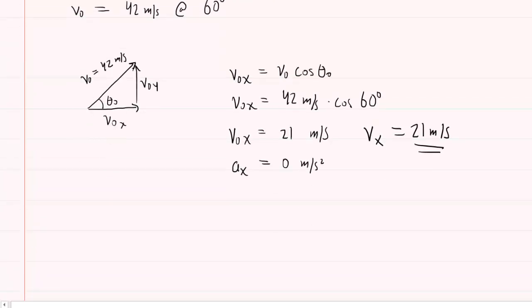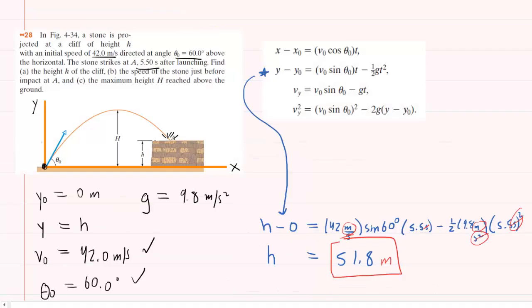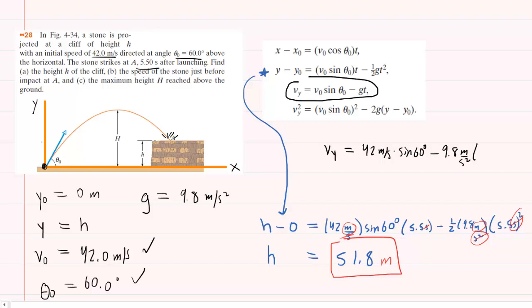Next, we find the final y-velocity using the projectile motion equation: final y-velocity equals the initial speed of 42 meters per second times sine of 60 degrees, minus 9.8 meters per second squared times 5.5 seconds. Punching that into the calculator, the final velocity in the y-direction is negative 17.5 meters per second.